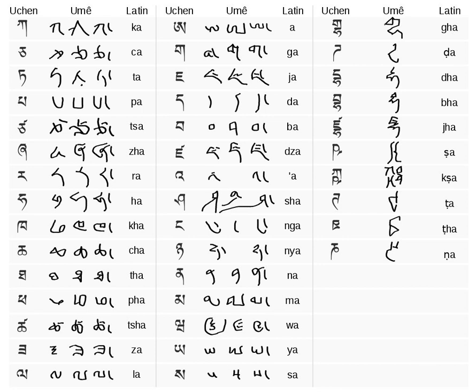The name Ume means 'headless' and is a style of the script used for both calligraphy and shorthand. A distinctive feature of Ume compared to Uchen is the absence of the horizontal guide line across the top of the letters. Between syllables, the tseg mark often appears as a vertical stroke.